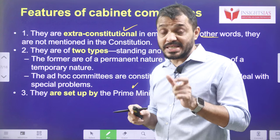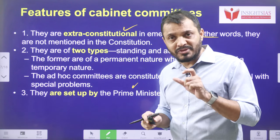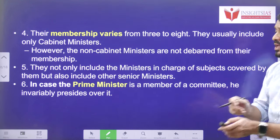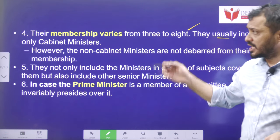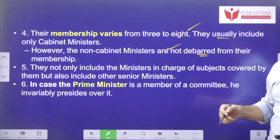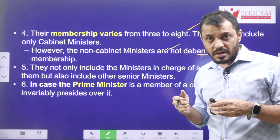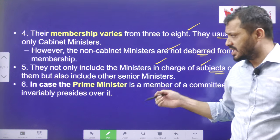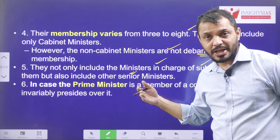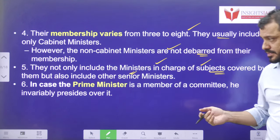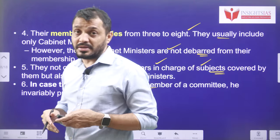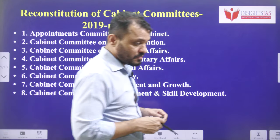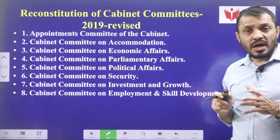According to Article 77, all rules will be issued in the name of the president, who makes rules for the convenient transaction of business of the union executive. The membership of cabinet committees varies from three to eight, and they generally include only cabinet ministers, though non-cabinet ministers can also participate. If the prime minister is a member of any cabinet committee, the prime minister acts as its chairman. According to revised rules in 2019, there are eight cabinet committees.